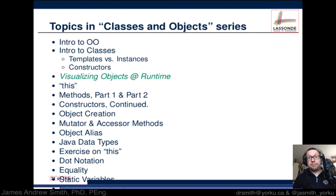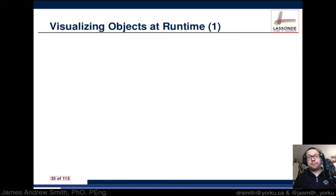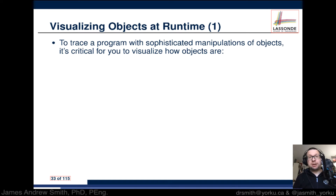Today we're going to be talking about visualizing objects at runtime. If you want to dive deeper into the general topic of classes and objects, you can take a look at the Beginning Java Fundamentals book in the York library. Today we're talking about accessors and mutators — basically how you get stuff and how you change stuff — and how you visualize and trace programs as objects change over time.